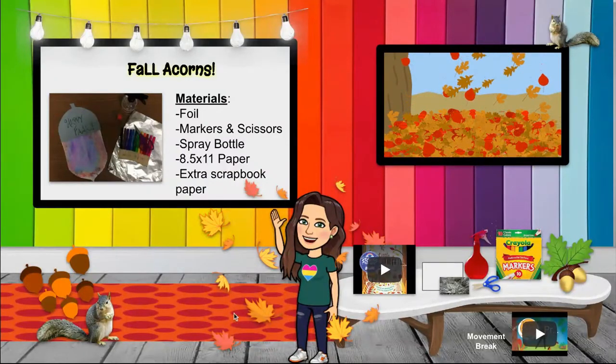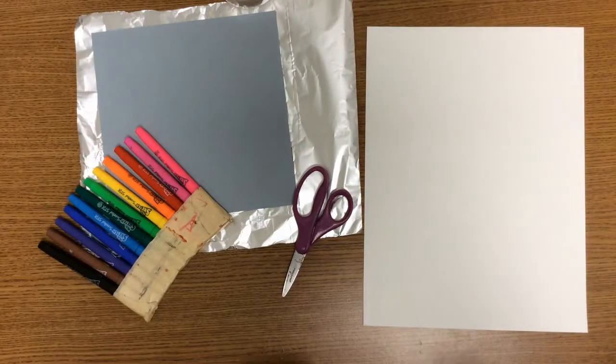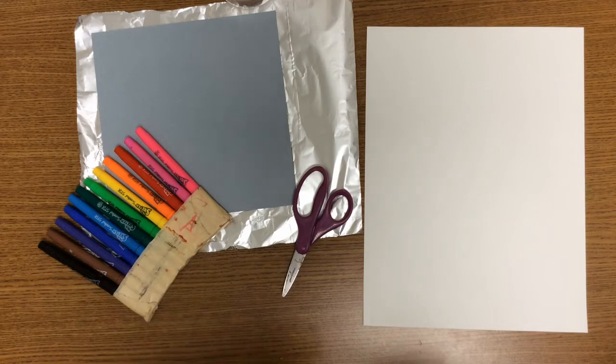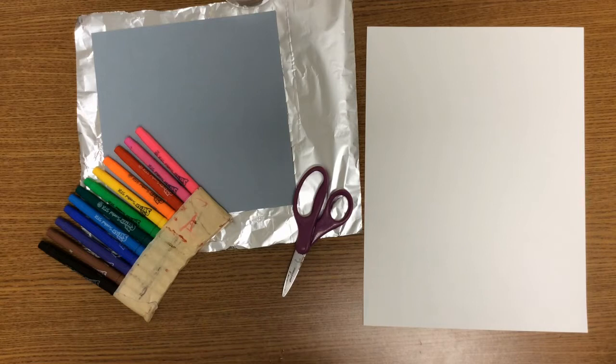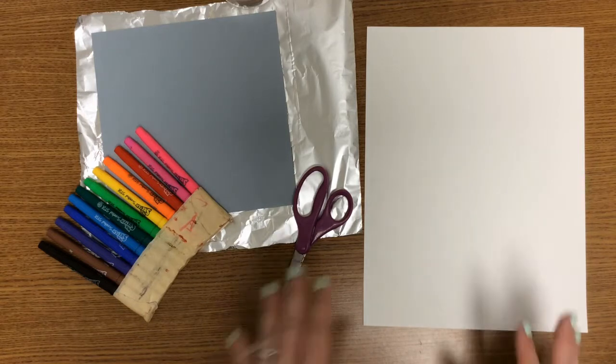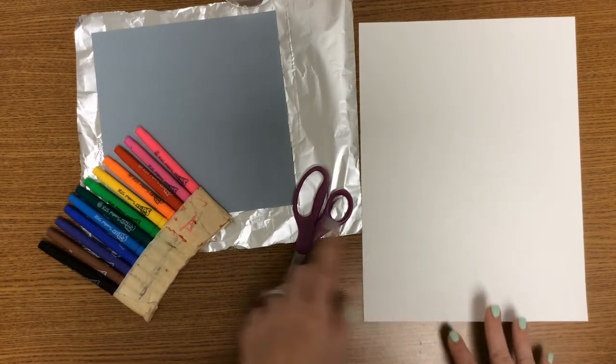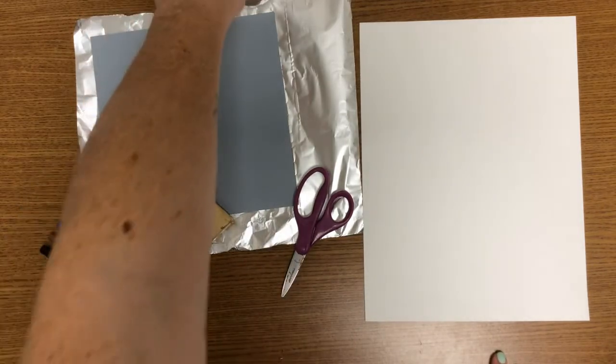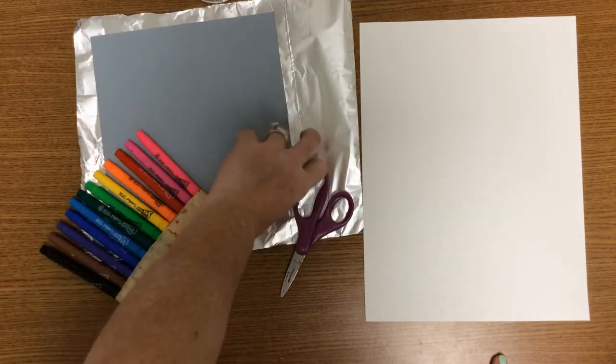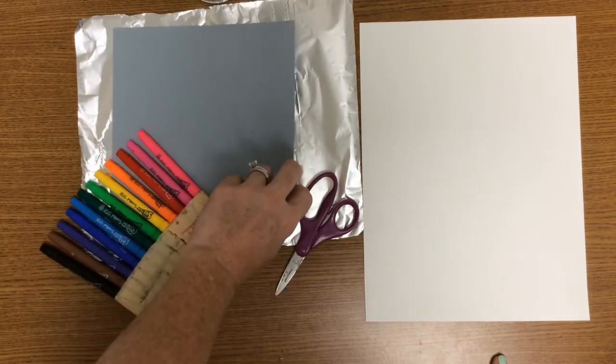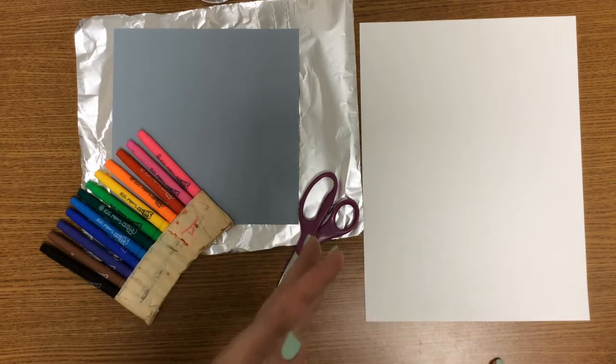Let's get started. Today we're going to be creating a simple fall activity making acorns. This lesson is inspired by Two Art Chambers. She had a great lesson on acorns. What you're going to need is a piece of paper, scissors, markers, a spray bottle, as well as aluminum foil, and I have some scrapbook paper that a friend donated.